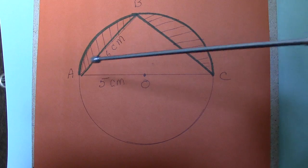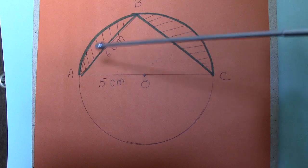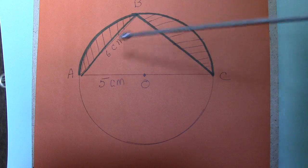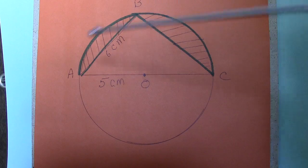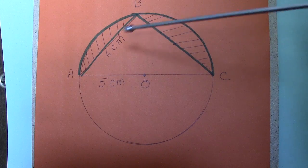So in other words, to do this problem we already know this length. The length of the triangle, the side of the triangle AB is 6 cm.